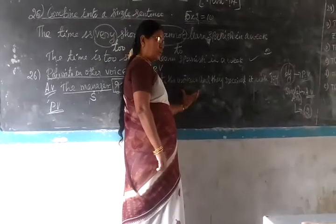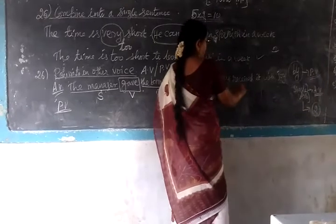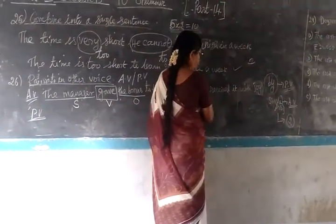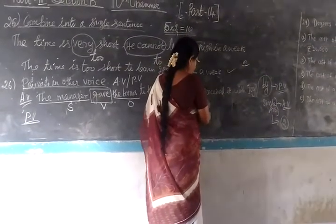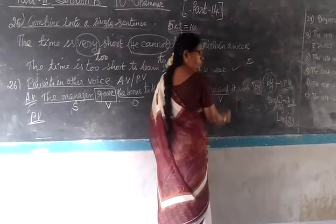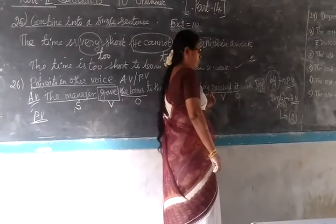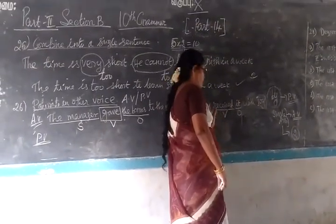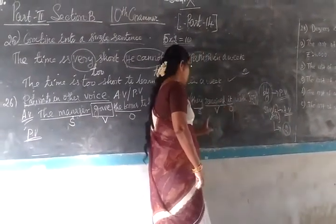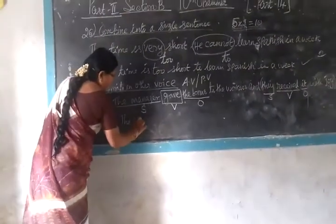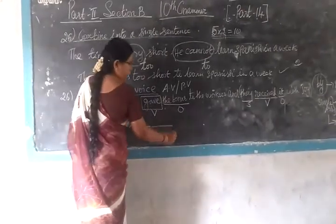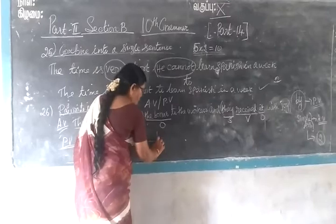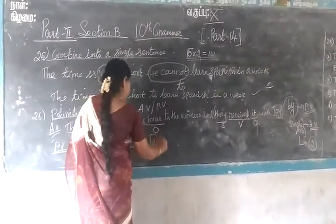To the worker — to whom was it given? To the worker. Here I have given another sentence. The sentence is: 'They receive it with job.' Here also the subject is 'they', verb is 'receive', object is 'it'. The object is changed into the subject. Now we change: 'the bonus' becomes the new subject. Since it is one verb, we are going to change it into a two-verb form. So you put the past participle and immediately follow with the preposition 'by'. Buy the manager.